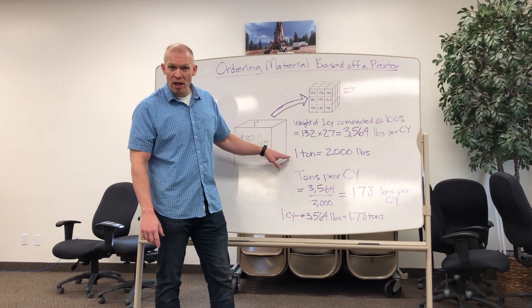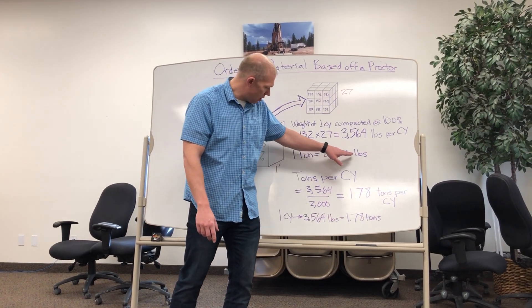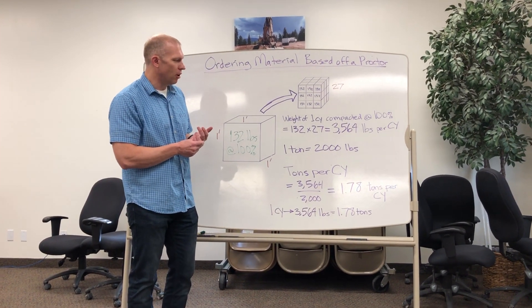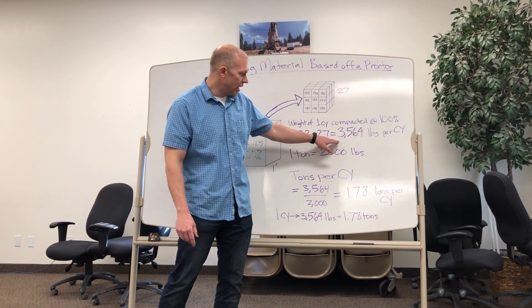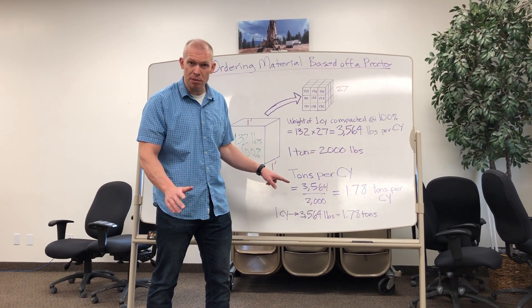The next step is we know that one ton is 2,000 pounds. So now we want to convert this weight here that we already figured out into tons per cubic yard.